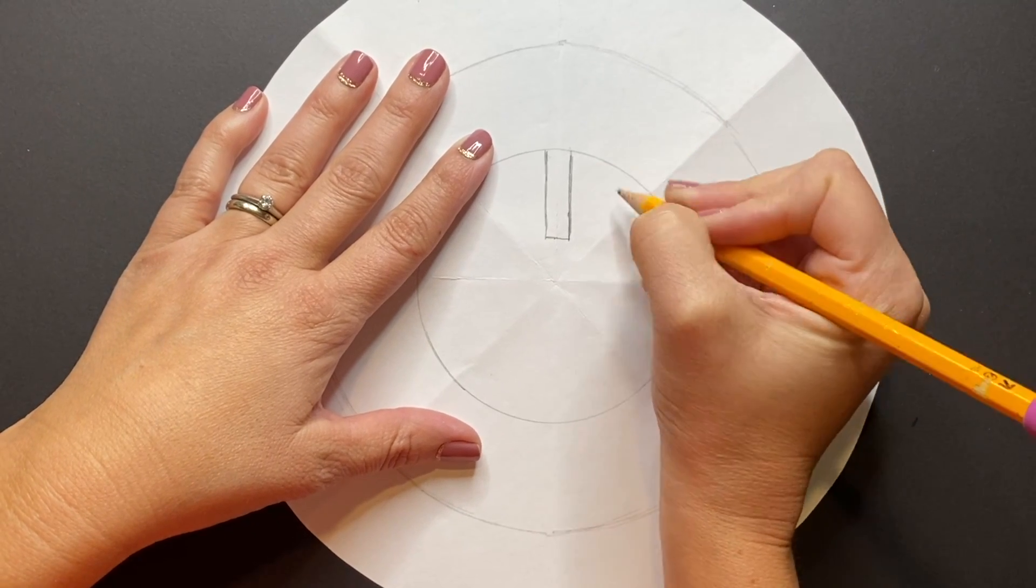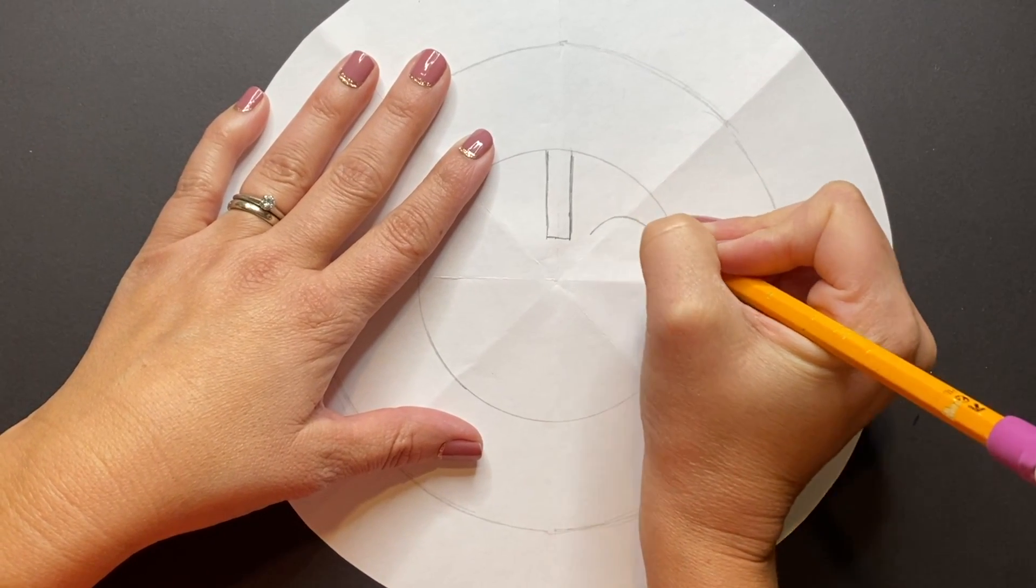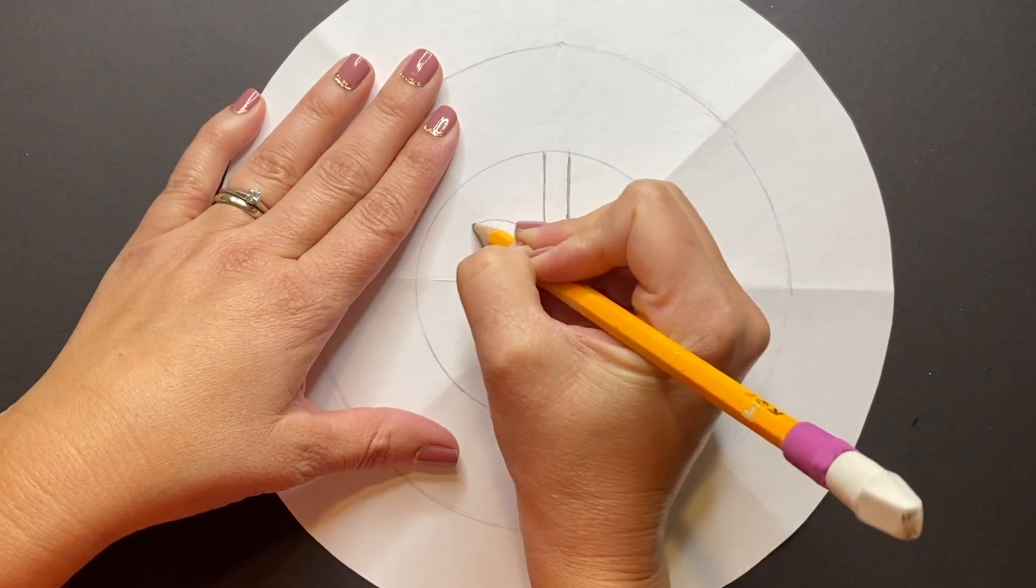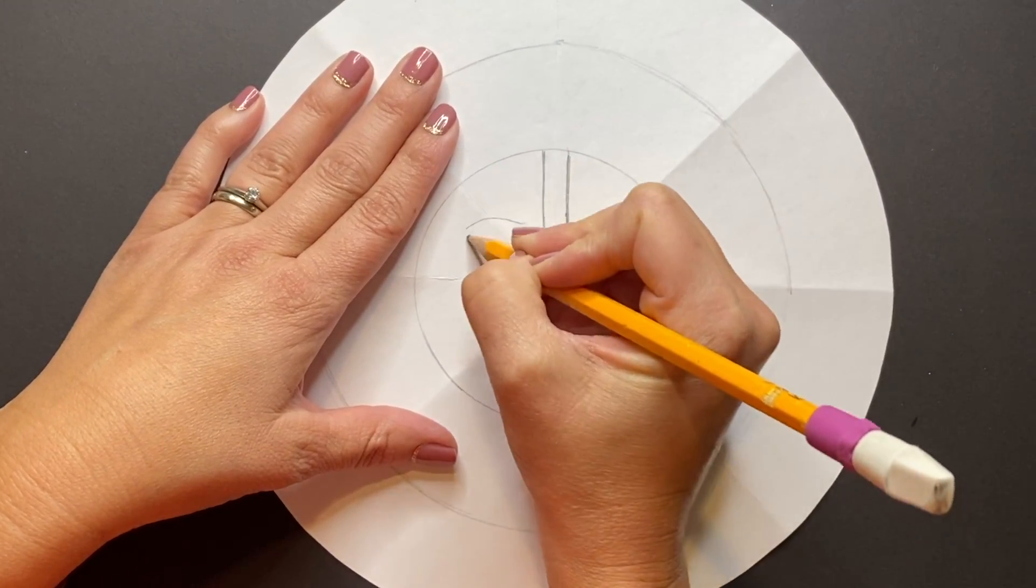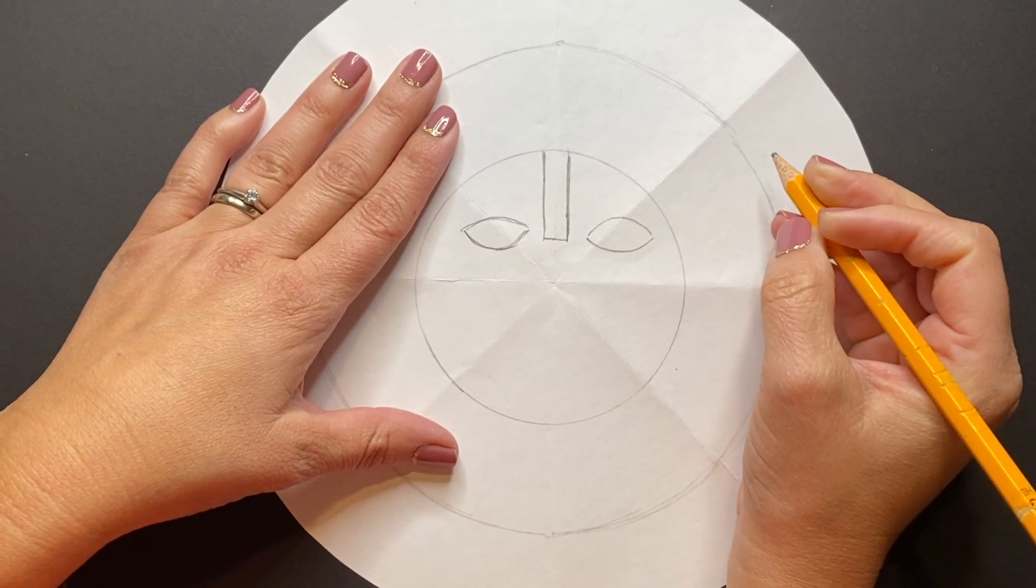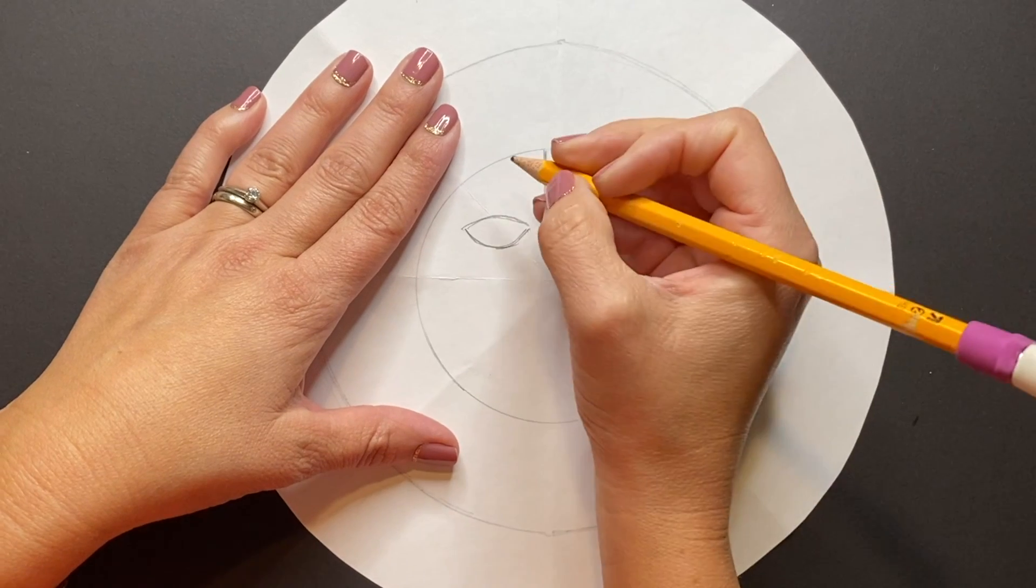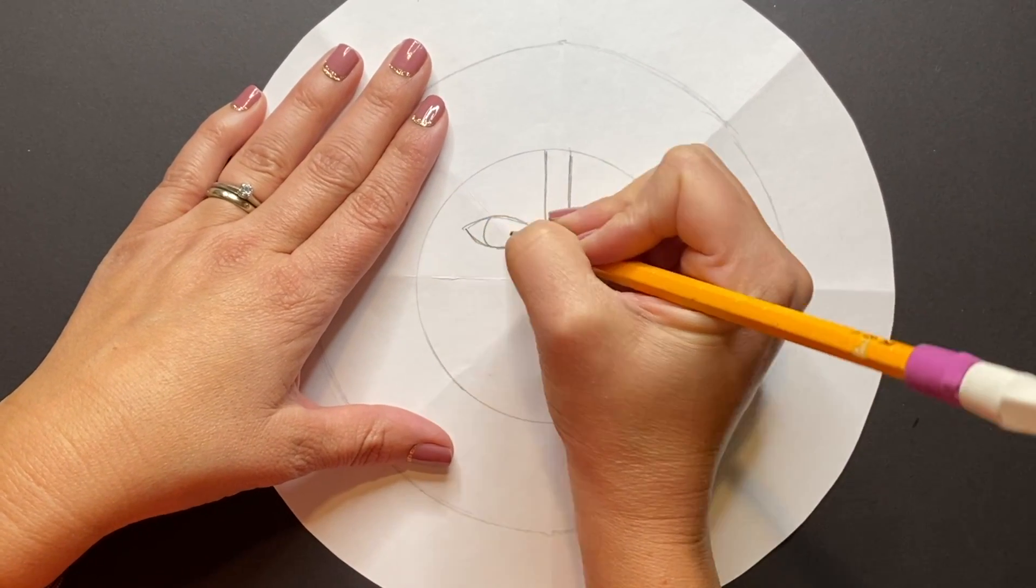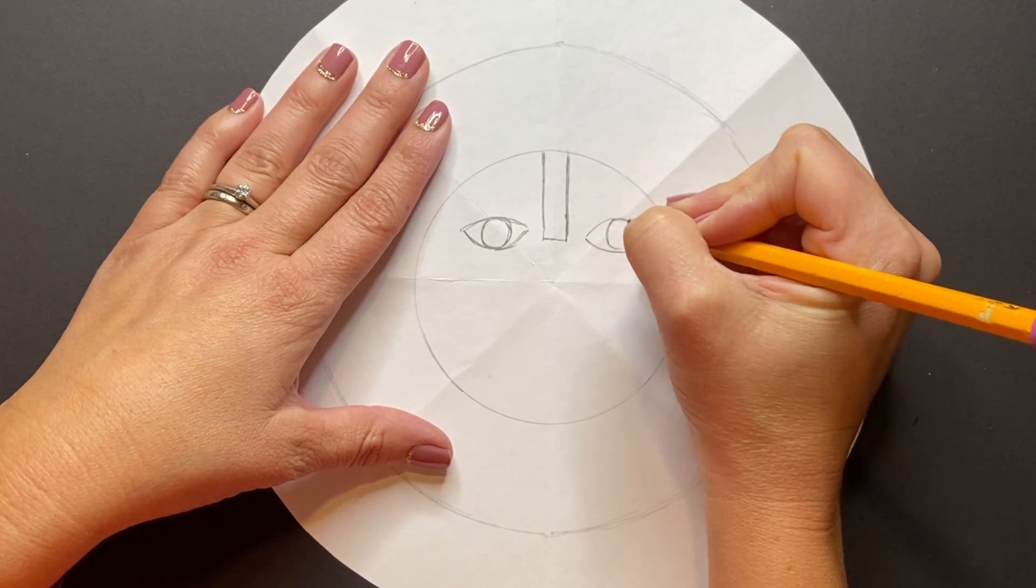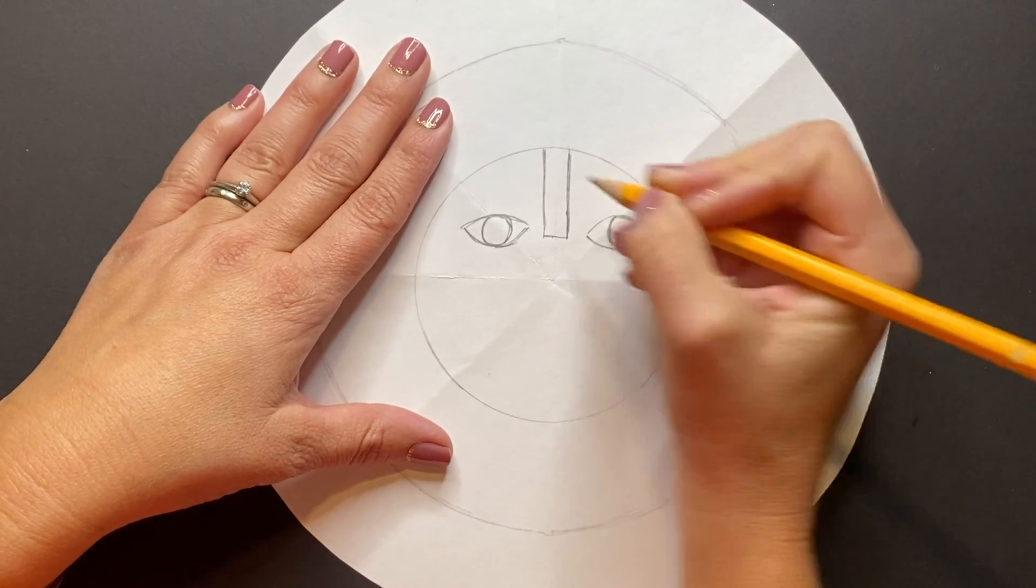Next we're going to work on our eyes, creating an ellipse shape, so a curved line up and a curved line down, one on each side. And then we're going to draw a curved line, a semi-circle inside of each of those ellipse shapes for our sun's eyes.